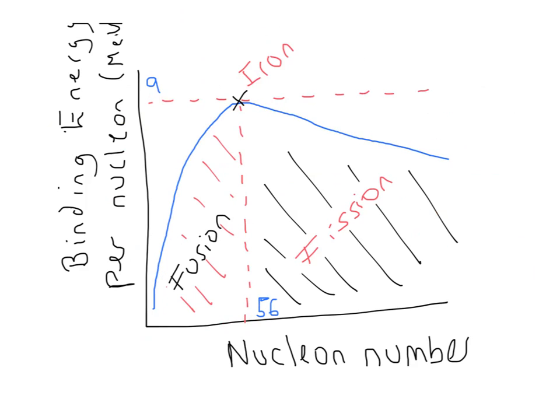So you're splitting apart into different what are called daughter nuclei. So the original one is the parent, and they split into two daughter nuclei which will have lower nucleon number. So that enables them to become more stable and get closer to this glorious 56 nucleon number which gives you the most stable type of atom.